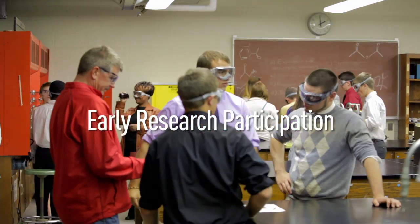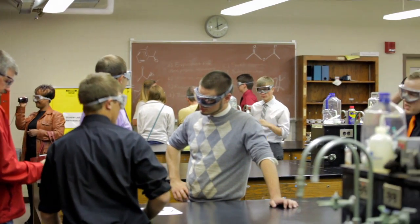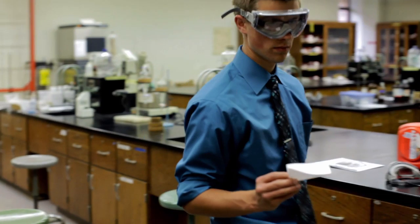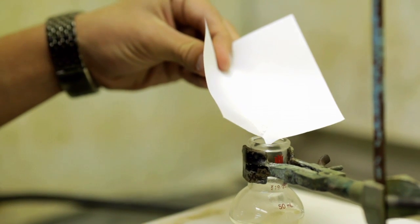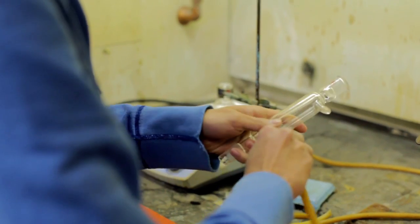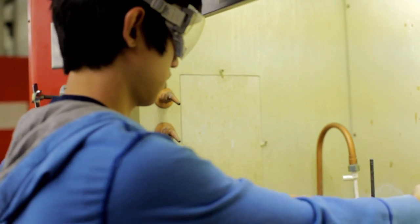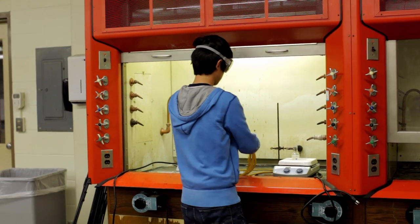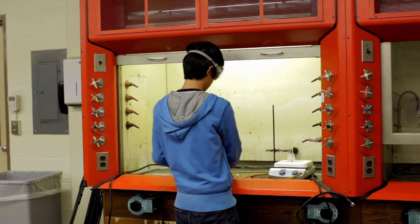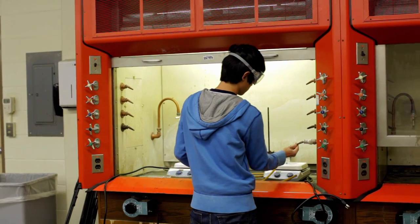Early research participation means that these students have between four to eight years start in terms of doing research. You don't have to have a PhD to do research. You don't have to go through four years of college to do research. You can start doing research right away.